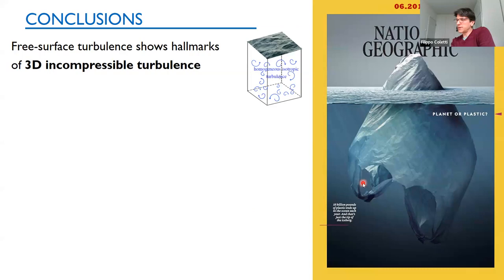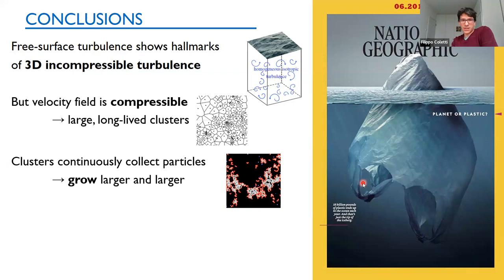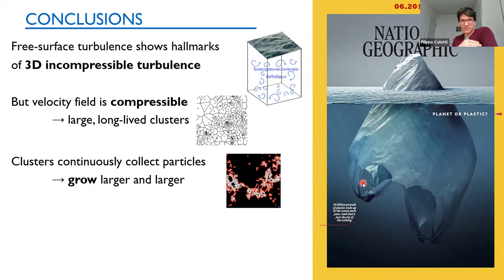In conclusion: we see that free surface turbulence shows essentially all the hallmarks of three-dimensional incompressible turbulence — except it is not 3D and it is not incompressible. The velocity field is compressible and two-dimensional, and because it's compressible it induces particle concentration. What was not expected is that this clustering happens over the integral scales of the flow, both in space and time. We also see that because particles are floating and interact through capillary forces, clusters grow faster than they break down — providing a continuous merging of clusters potentially leading to one large island, much like the Great Pacific Garbage Patch.